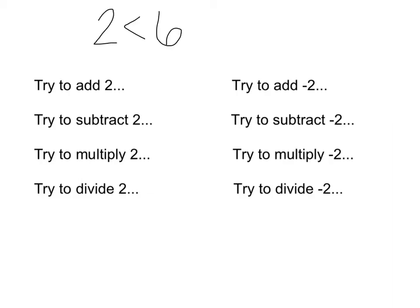We're going to start with the inequality 2 is less than 6. We all know that 2 is less than 6, and we're going to try all these different things to see what happens when we add, subtract, multiply, and divide things. First we're going to try adding 2. If I add 2 to both sides, that's 2 plus 2, which is 4, and we keep the sign, so 4 is less than 8. Is 4 less than 8? Yes, so that's fine. Adding positive numbers to both sides is fine.